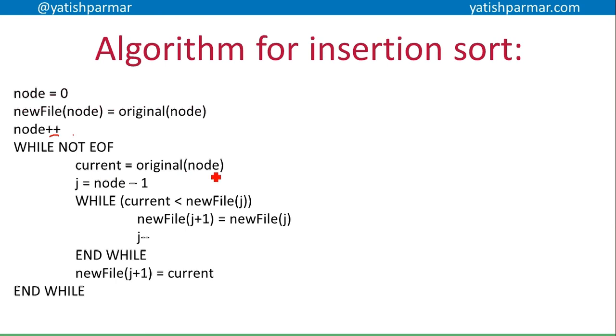While I'm not at the end of file in my original file, my current is going to equal the original node. So I'm going to create a temporary variable called current, and that's just going to hold what the current item is that I'm going to copy from my original list. I'm now going to create j, and that's going to be equal to node minus one. So if I've now copied over the first node, I need to compare that first node in my original list to the zeroth item in my new list.